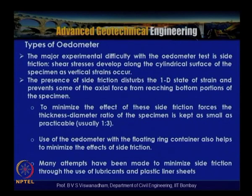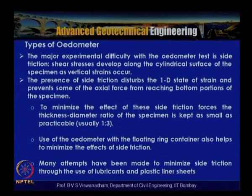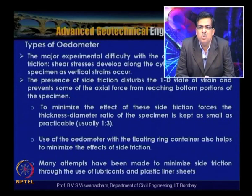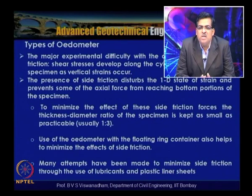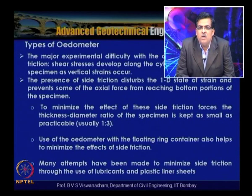The presence of side friction disrupts the one-dimensional state of strain and prevents some axial force from reaching the bottom portion of the specimen. To minimize side friction, the thickness-to-diameter ratio is kept as small as practicable at 1:3 — one key reason for maintaining this ratio.